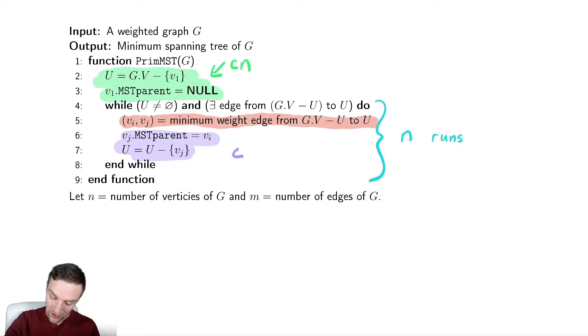So this part here actually runs m times or cm for the cost, which means that this total loop all takes theta of n times m.